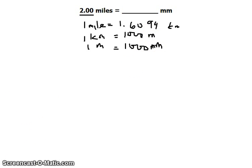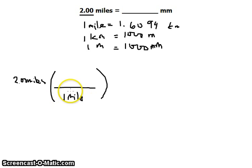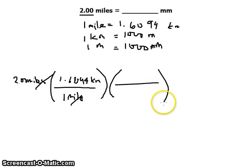As you can see, we can proceed with the solution. Starting with 2.00 miles, we multiply this by the conversion factor with 1 mile in the denominator and the numerator in kilometers. This allows us to cancel out miles, and then we multiply by another unit conversion factor.